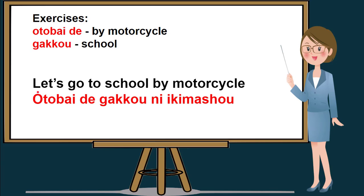Take note that in this sentence we use let's go, so let's not forget the masho form — that's why we use ikimasho. And again, we did not use any pronoun or noun, so otobayde will be written in the beginning of the sentence, which means by motorcycle. And again, we use the particle ni that indicates the place or location, which is the school. Let's go to school by motorcycle in Nihongo will be otobayde gakko ni ikimasho. Please repeat after me: otobayde gakko ni ikimasho. Or in English, let's go to school by motorcycle.